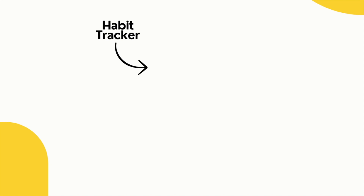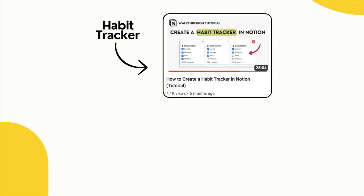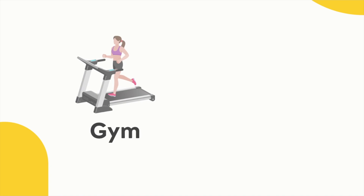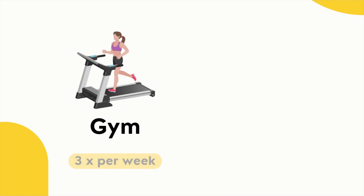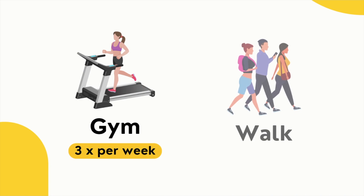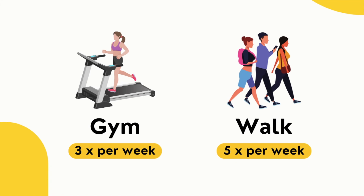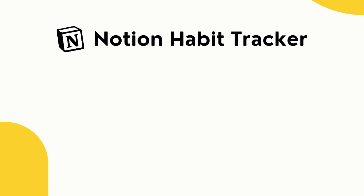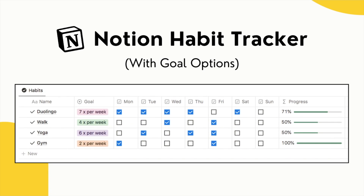I made a video a while ago on how to build a habit tracker in Notion, but many of you asked if there was a way to select a specific goal for each habit. There might be some habits that you only want to complete three times a week or five times a week, but most Notion habit trackers don't allow for this. In this video I'll be showing you how to build a Notion habit tracker with the option to select different goals and see your progress.